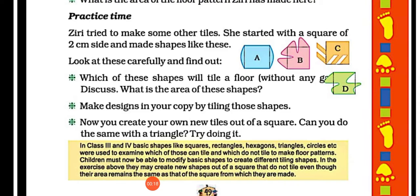One practice time question. Ziri tried to make some other tiles. She started with a square of 2 centimeter side and made shapes like these. Here we have A, B, C, D - there are 4 shapes that have been made by Ziri, and these are tiles with 2 centimeter side.